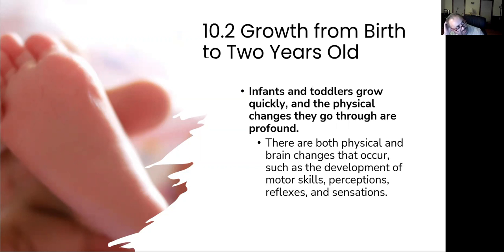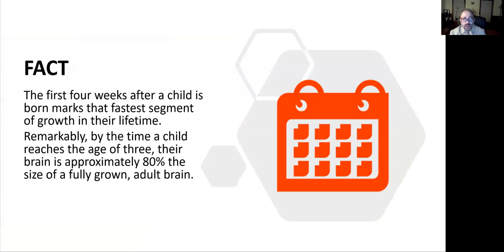Most of the changes in the brain occur when the child is in the womb of the mother, but it does not finish the job until after birth. The brain also grows in size, and by the end of the child's second year, their brain will be approximately 80% of the size of an adult human brain. The first four weeks mark the fastest segment of growth in the lifetime. By the time the child reaches age three, their brain is approximately the size of an adult — almost 80%.